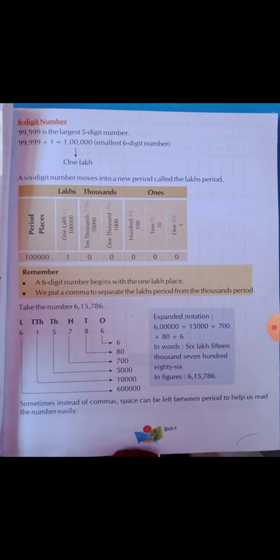How do we write it in words? We write this number as six lakh fifteen thousand seven hundred eighty-six. In figures, we write it using commas: we separate the ones period, the thousands period, and the lakhs period with commas, giving us 6,15,786.